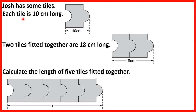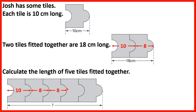Josh has some tiles. Each tile is 10 centimetres long. Two tiles fitted together are 18 centimetres long. Calculate the length of 5 tiles fitted together. We know one tile is 10 centimetres, so the tile fitted together must overlap by an extra 8 centimetres. The first tile takes up 10 centimetres, and then each additional tile adds 8 centimetres. So we add 10 plus four eights: 4 times 8 is 32, and 32 plus 10 is 42 centimetres.